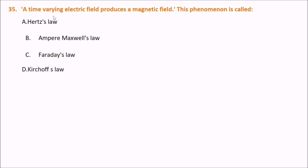A time-varying electric field produces a magnetic field. This is correct. A time-varying electric field will also produce a magnetic field — you have to identify this phenomenon.